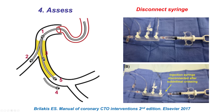One possibility is that it doesn't move but stays behind the proximal cap. The second is that it enters a side branch. The third is that it stops inside the occlusion. The fourth, it goes sub-intimally distal to the distal cap. And the fifth is that it enters into the distal true lumen. A key part of doing any antegrade dissection reentry is to protect against extending the dissection by disconnecting the injection syringe from the manifold to avoid accidental injection of contrast into the sub-intimal space.